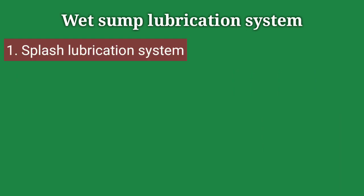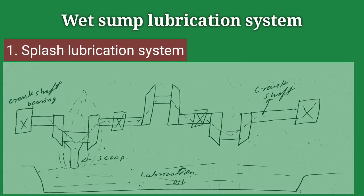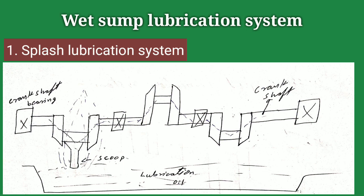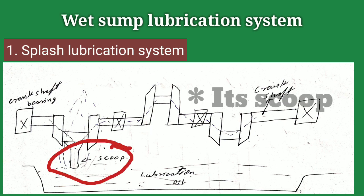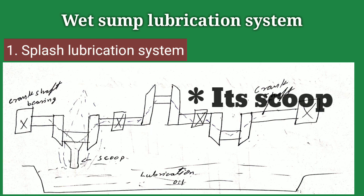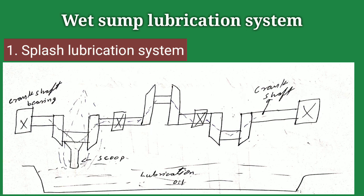The first one is splash lubrication system. In splash lubrication system, as we see in this basic figure, the lower part is called the sump in which the lubricating oil is filled. When the crank comes inside the lubricating oil, the scoop sucks the lubricating oil and provides it to the different parts of the engine. So this is the splash lubrication system.